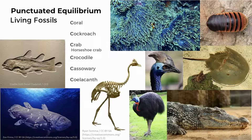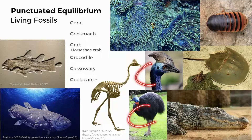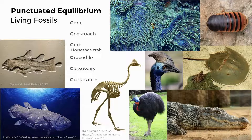Examples of living fossils include corals, cockroaches, and crabs like the horseshoe crab, which is considered the modern descendant of trilobites, as well as crocodiles, the cassowary — the second largest living bird at up to two meters tall — and the coelacanth, whose first recorded living species was caught off South African coasts in the 1930s. Many insects trapped in amber are also identical to their modern descendants, and some bacteria living today are identical to fossils considered millions of years old.